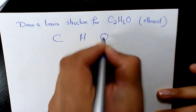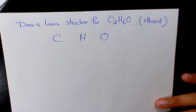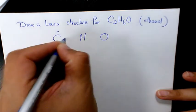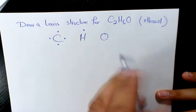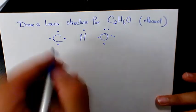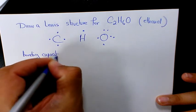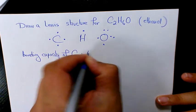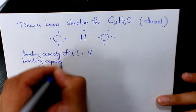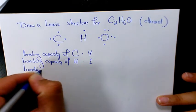We have three elements. The first thing we need to do is draw the symbols for each of them and figure out which one is the central element. The number of valence electrons for carbon is 4, for hydrogen is 1, and for oxygen is 6. So the bonding capacity of carbon is 4, bonding capacity of hydrogen is 1, and bonding capacity of oxygen is 2.